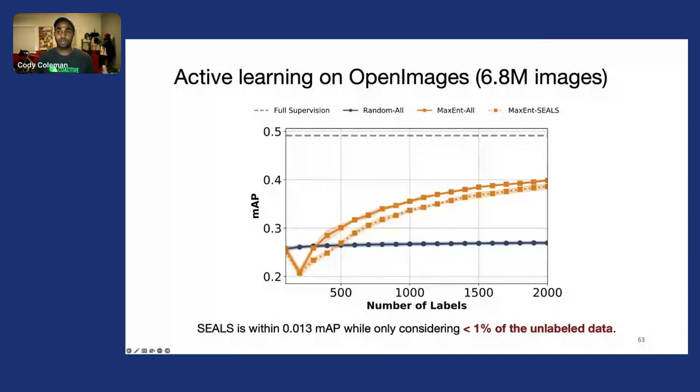And for more complex methods that scale quadratically, we can get three orders of magnitude speedups compared to them.